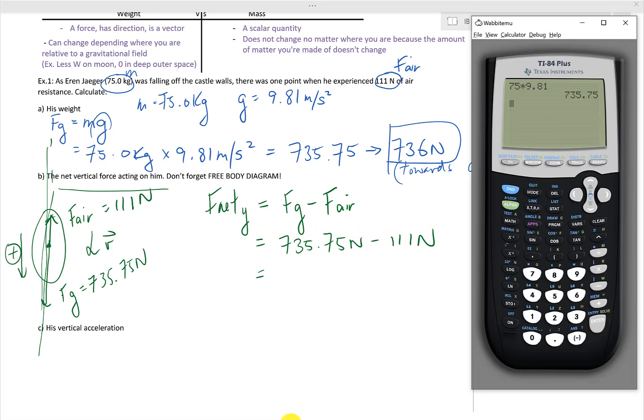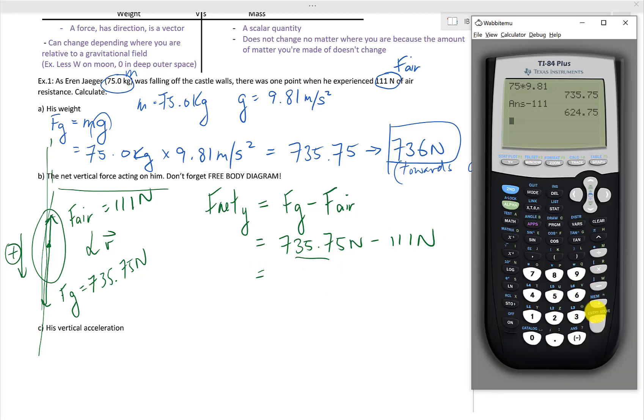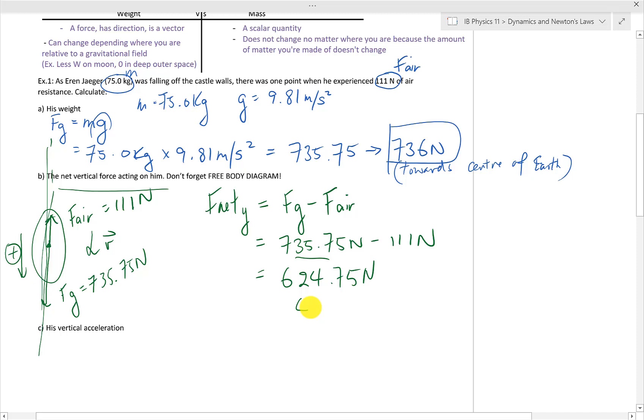Put the Y for the vertical and subtracting F air because it's pointing opposite to my positive direction. Making sure that I do not round off my answers from the last question. I get 624.75, rounding off 625 newtons, and this is where I must state the direction because the net vertical force is in a downwards direction.